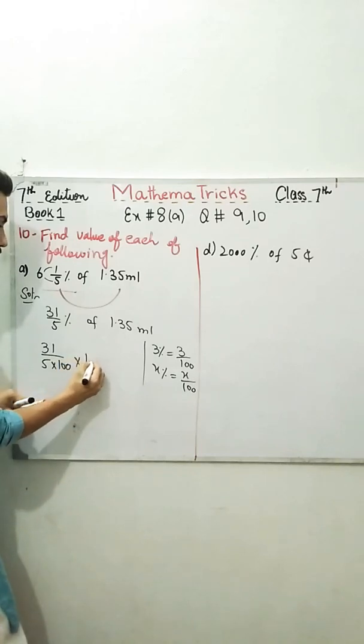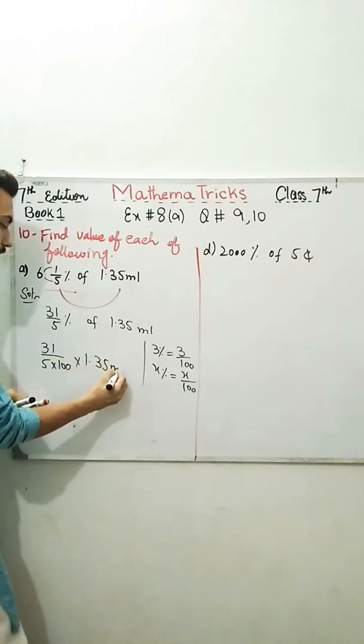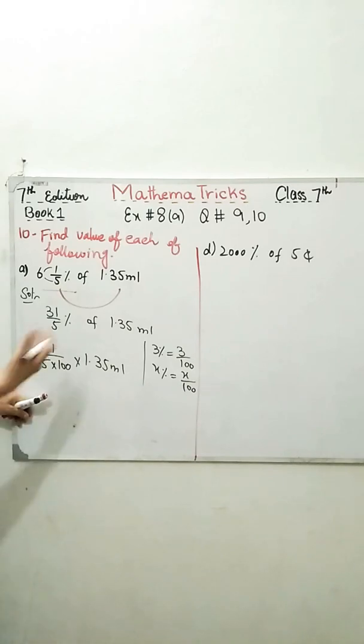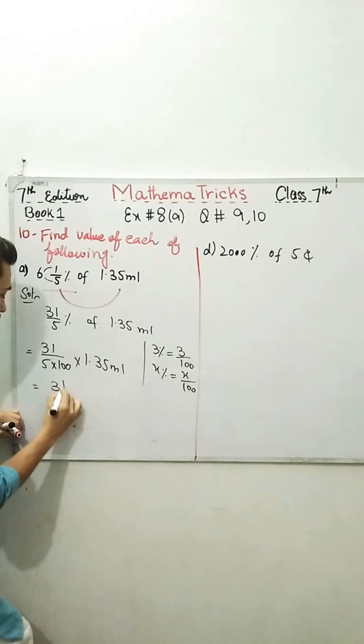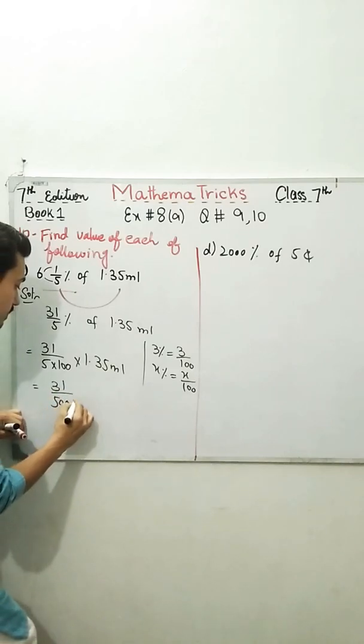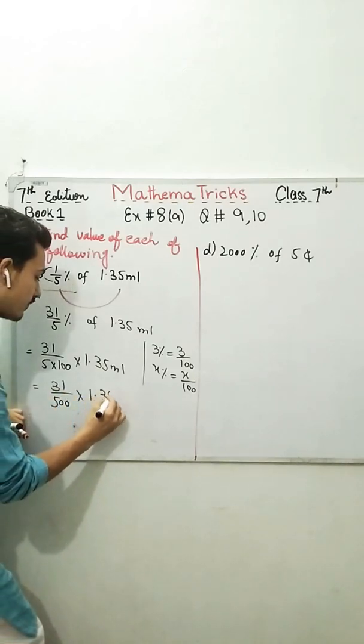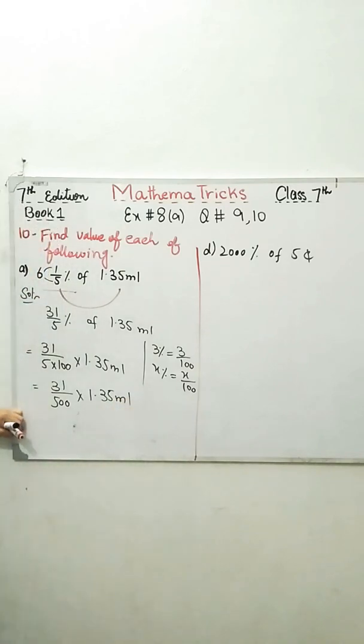Do you remember as we convert this percentage into simple form which is simply divided by 100. Or in the denominator, we multiply with 100. Because 3 percent is equal to 3 over 100. So x percent is equal to x over 100. Similarly, this percent means this over 100 of into 1.35 ml.